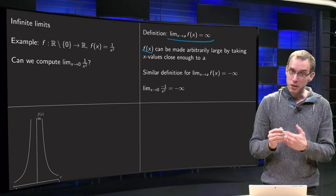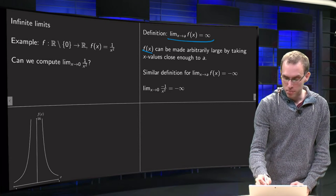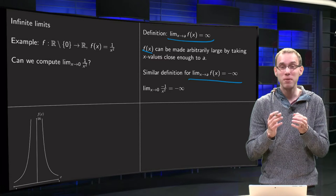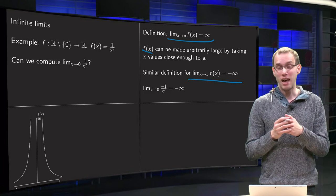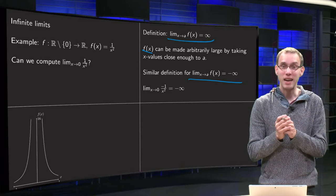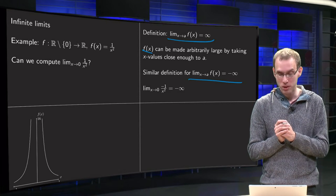And a similar definition for f of x equals minus infinity, what does that mean? Then we can get f of x arbitrarily small negative by taking x close enough to a.